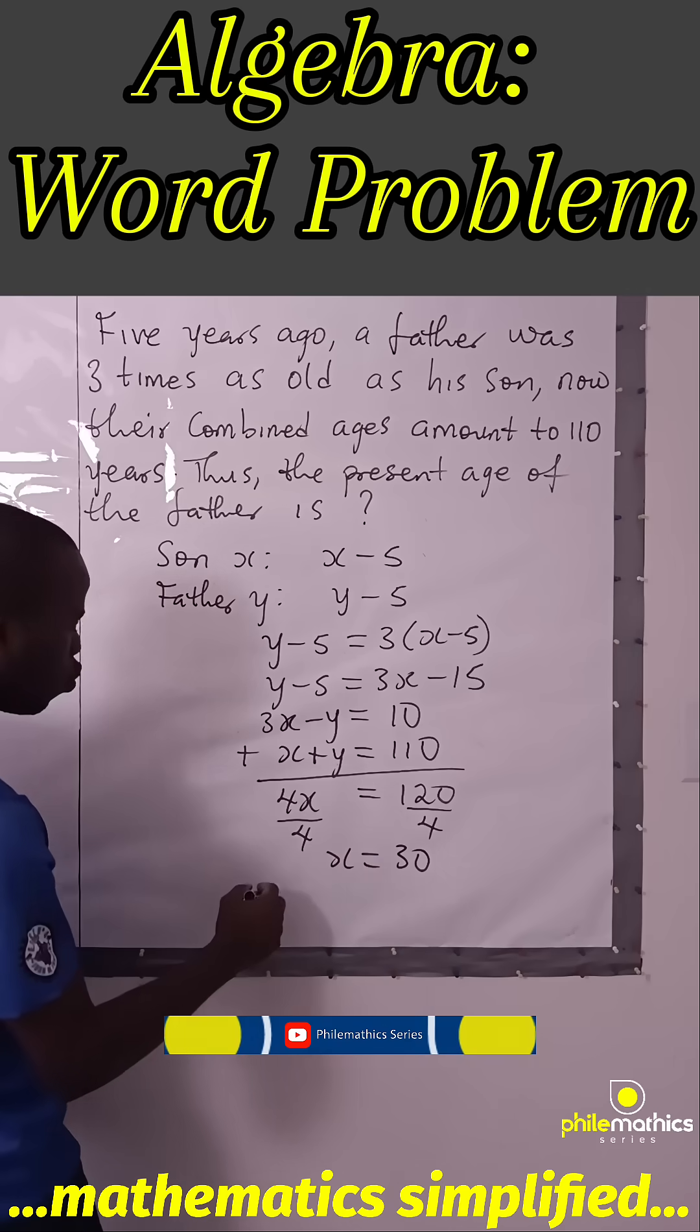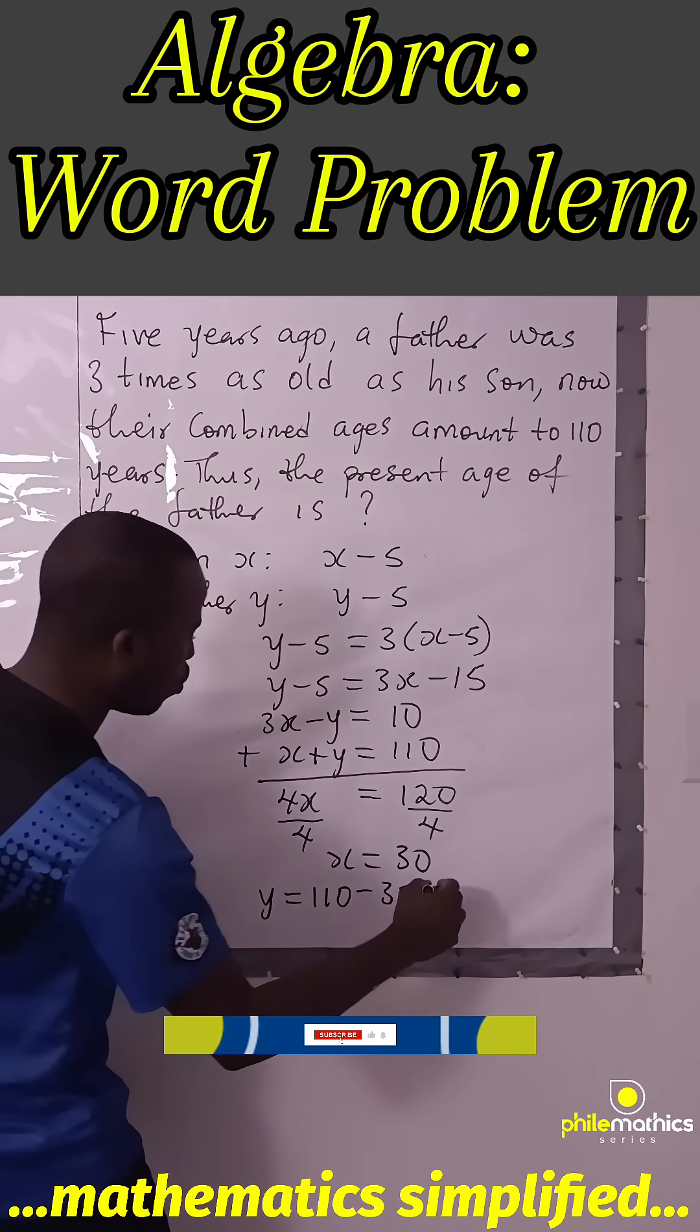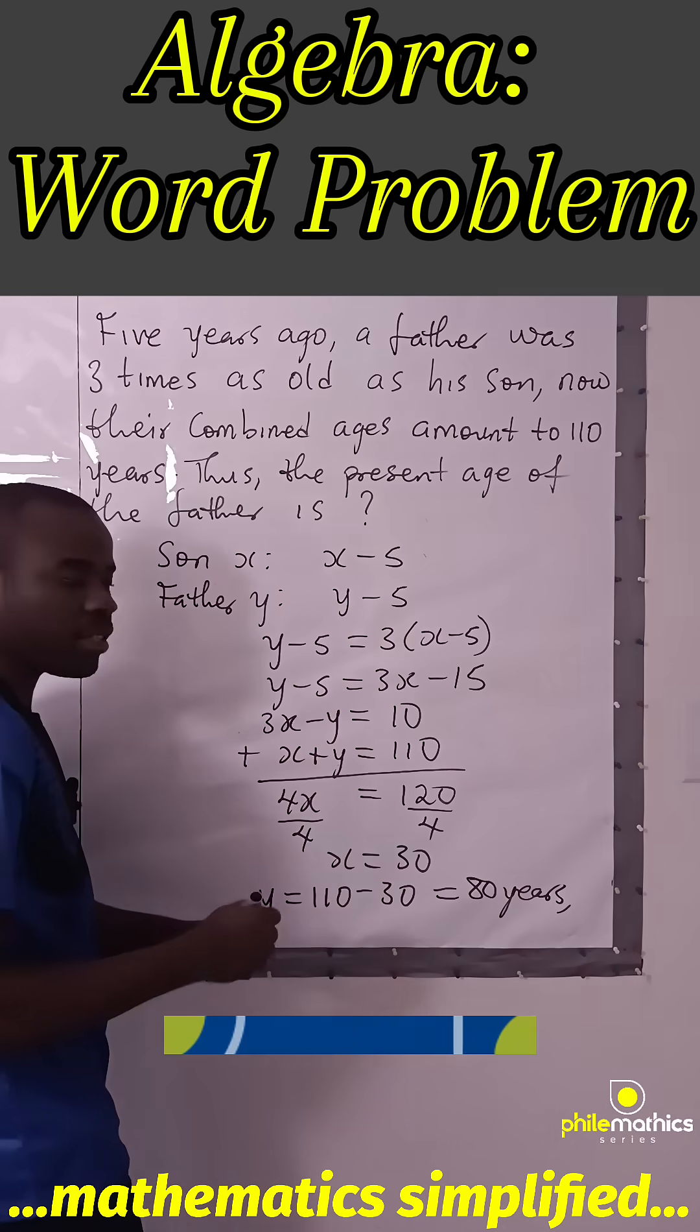And so, from equation two, the age of the father... So the father is 80 years. Thank you for watching.